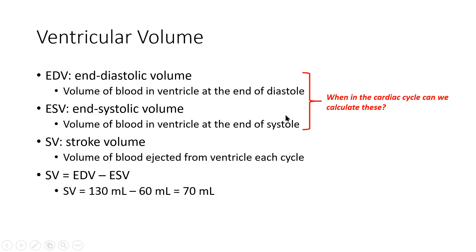For end systolic volume, we want to capture this at the end of ventricular ejection — the end of phase three. After blood has left the ventricles and the semilunar valves close once again, that's when we record the end systolic volume, because that is what is left in the ventricle at the end of systole. So EDV is recorded at the end of phase one, and ESV at the end of phase three. From those two volumes we can calculate stroke volume.